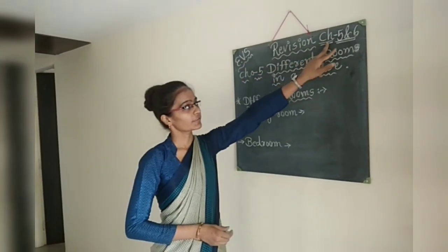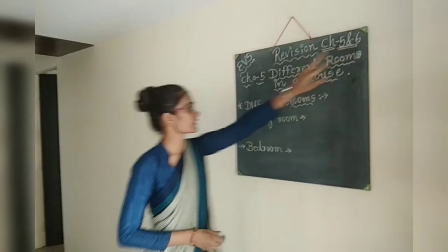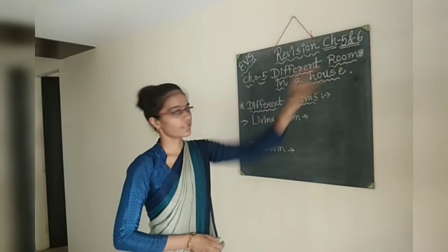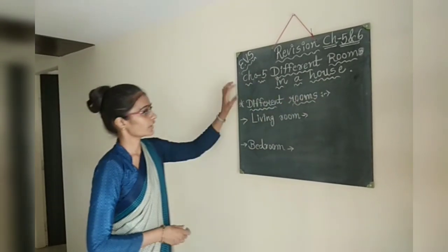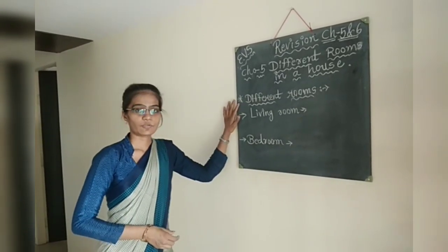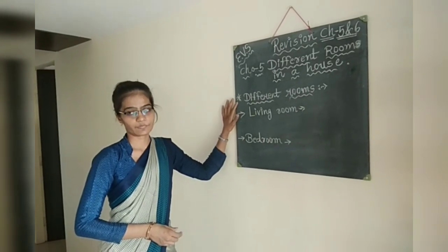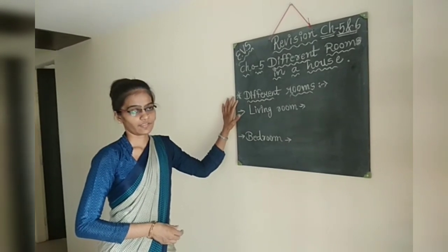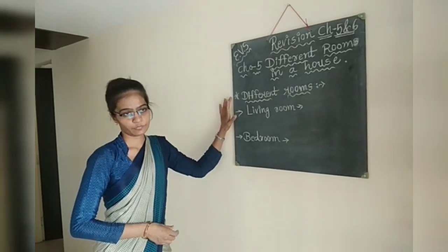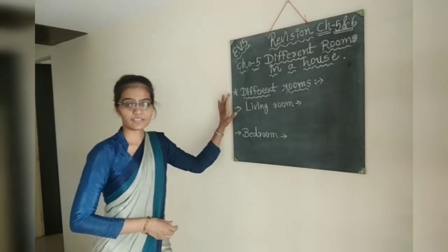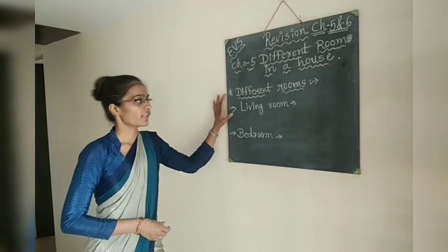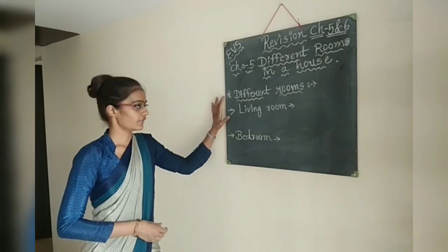We will revise Chapter No. 5 and Chapter No. 6. Chapter No. 5 is 'Different Rooms in a House.' In a house there are different rooms. For example, Living Room, Bedroom, Bathroom, Kitchen, and Study Room. These are the different rooms in a house.